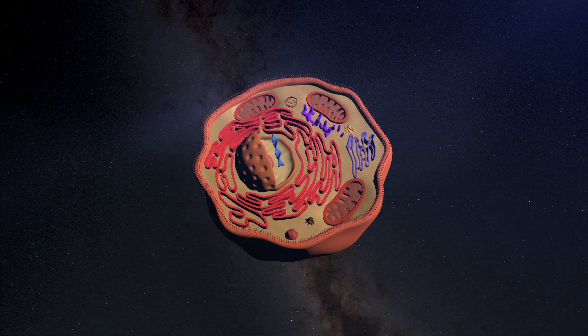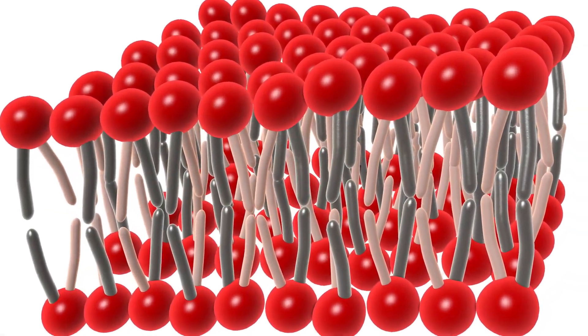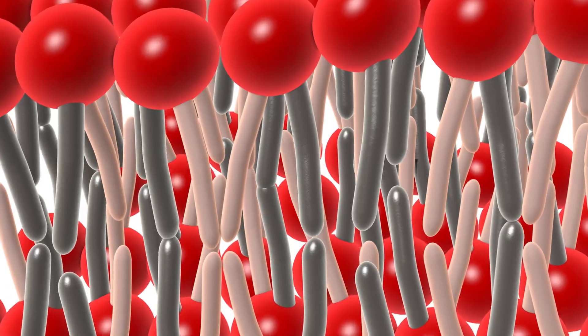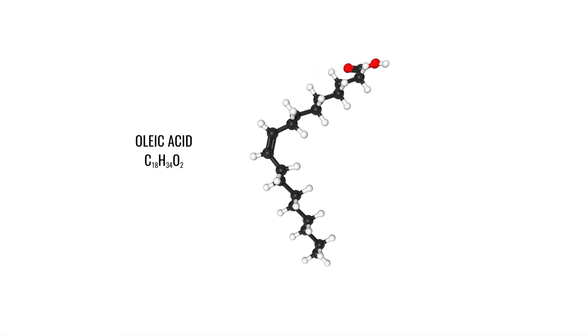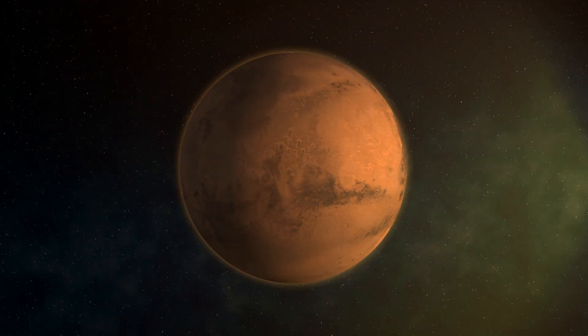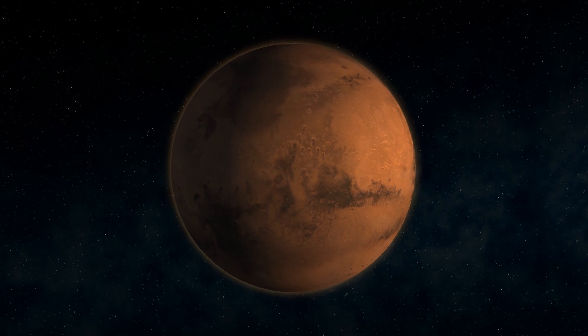Life on Earth is made from cells. Cells are surrounded by membranes, and cell membranes contain large organic molecules called fatty acids. Could these building blocks of life also exist on Mars?